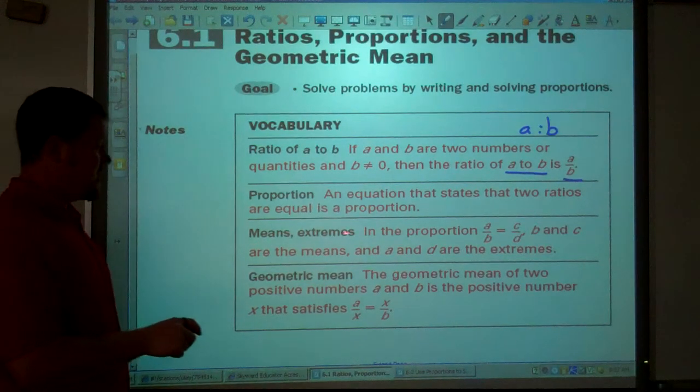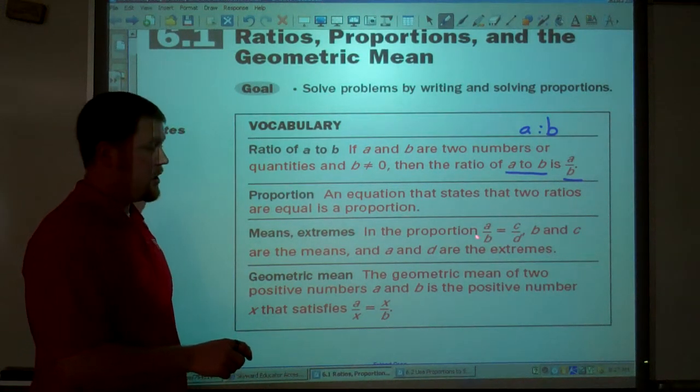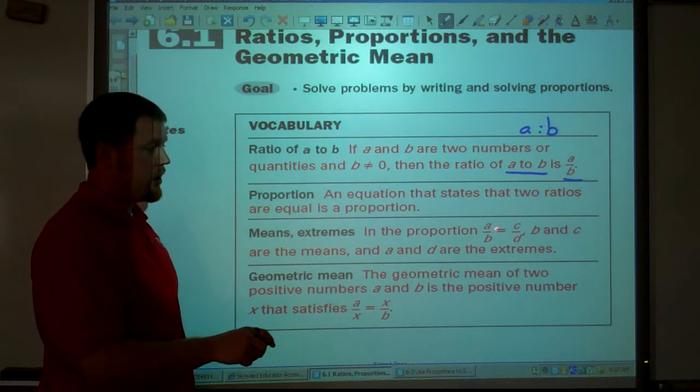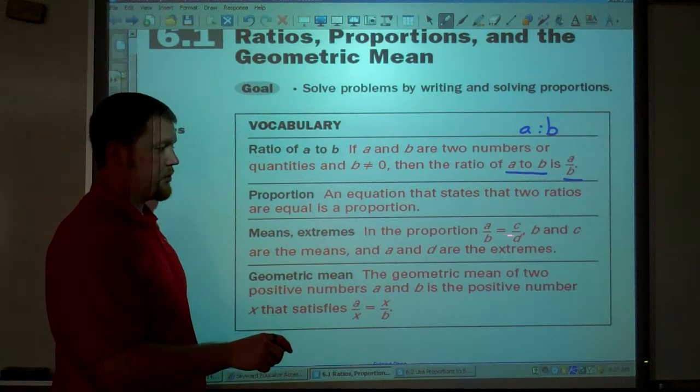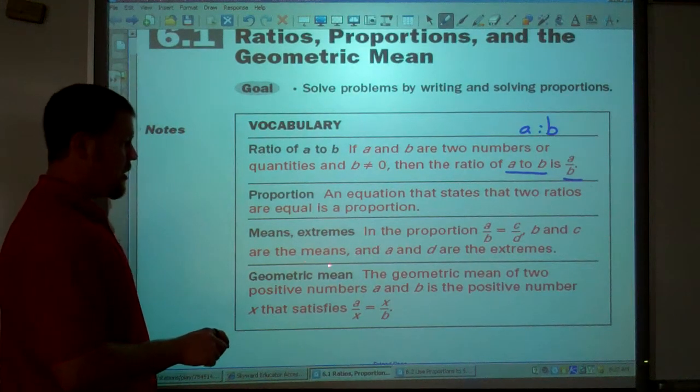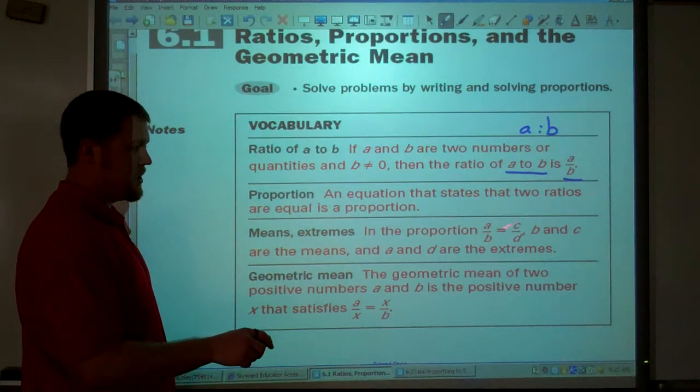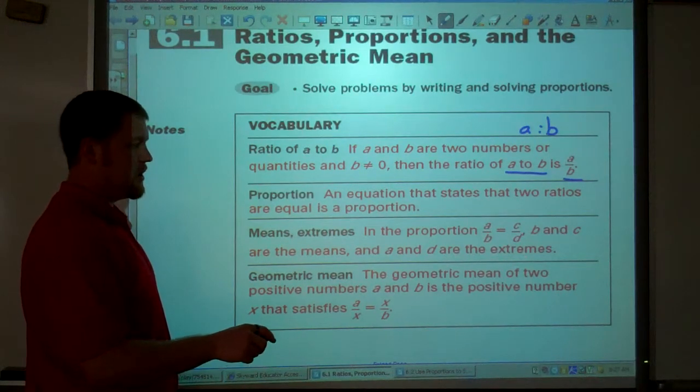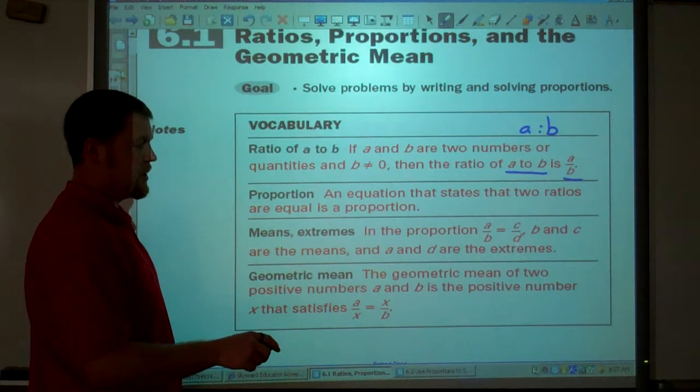The means and the extremes in your proportion. Here's the first ratio. Here's the second ratio. They are equal. That's proportion. In your proportion, B and C are the means. And A and D are the extremes. A is there and D is there.